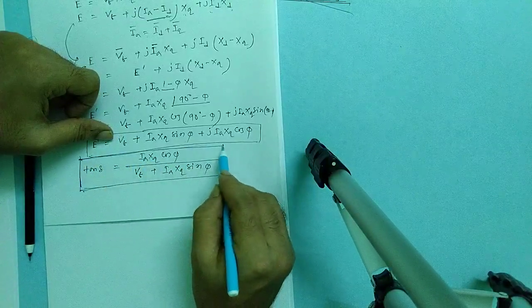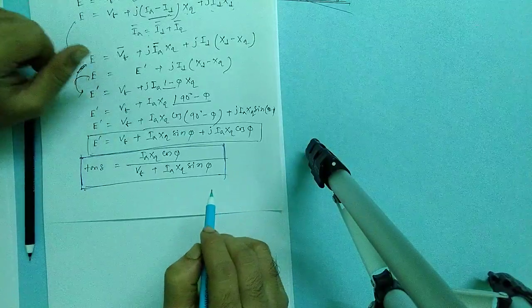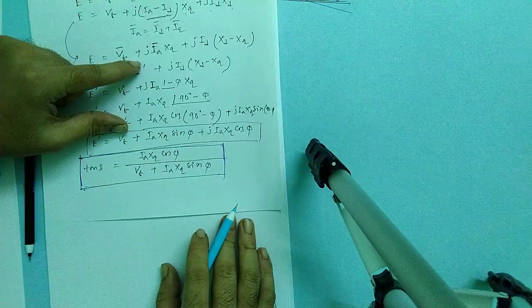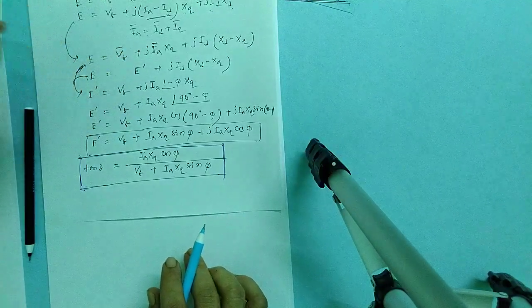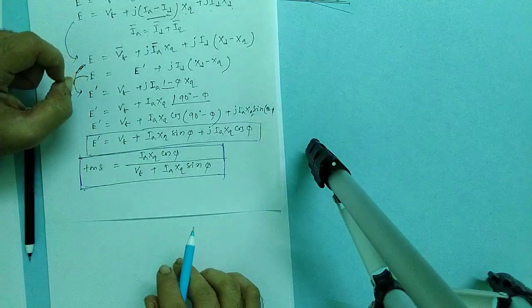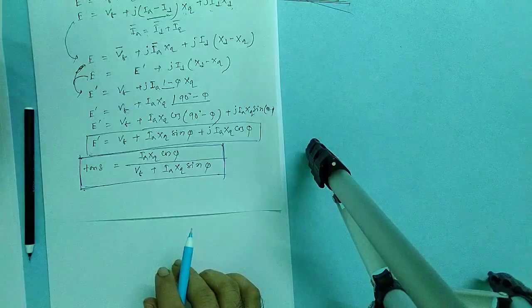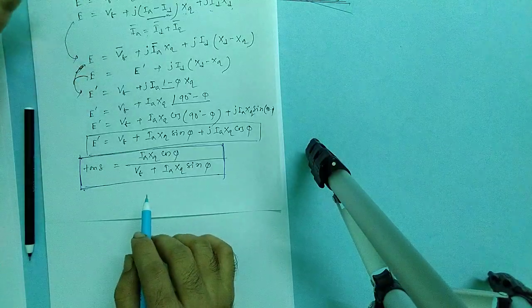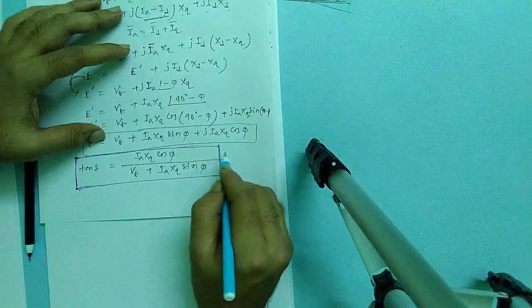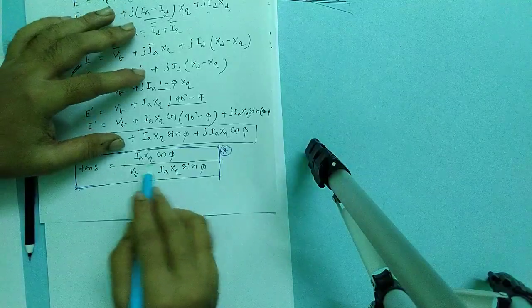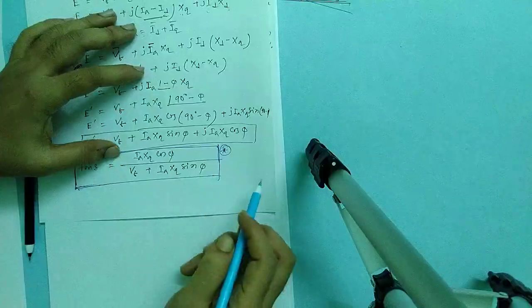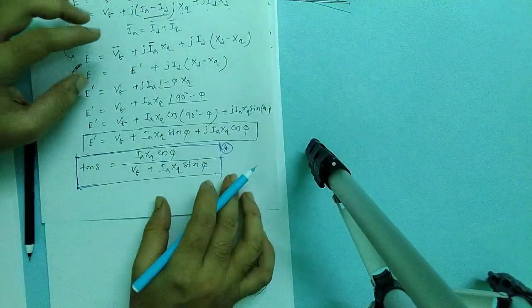That is the formula which I told in the last video, that you have to remember it when you will solve some problem from salient pole generator. You have to use this formula. Just remember it, it is very simple to remember: just i_a X_q cos phi by V_t plus i_a X_q sin phi.